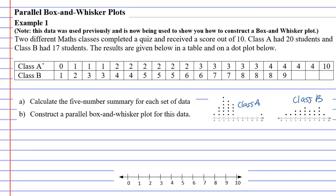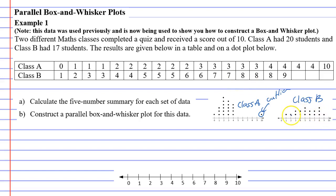When we look at class A, you'll notice most of the marks are between 0 and 4 marks out of 10, and then you've got that one student who got 10 out of 10. We can see that on the dot plot, and you can tell just by looking it's going to be an outlier. And then class B — they got scores between 1 and 9, and you can see it's quite spread out.